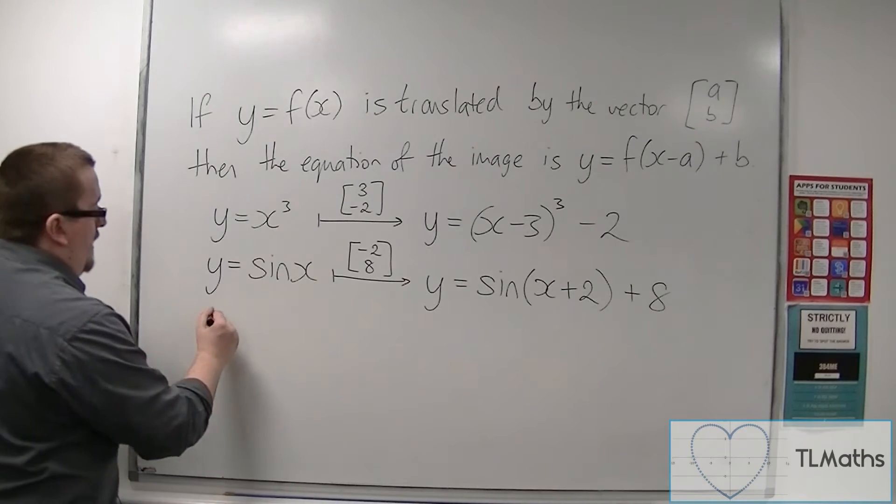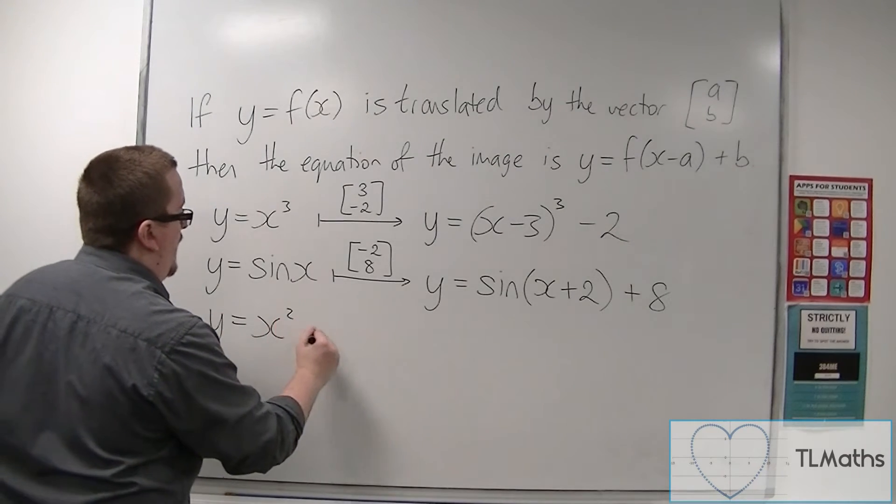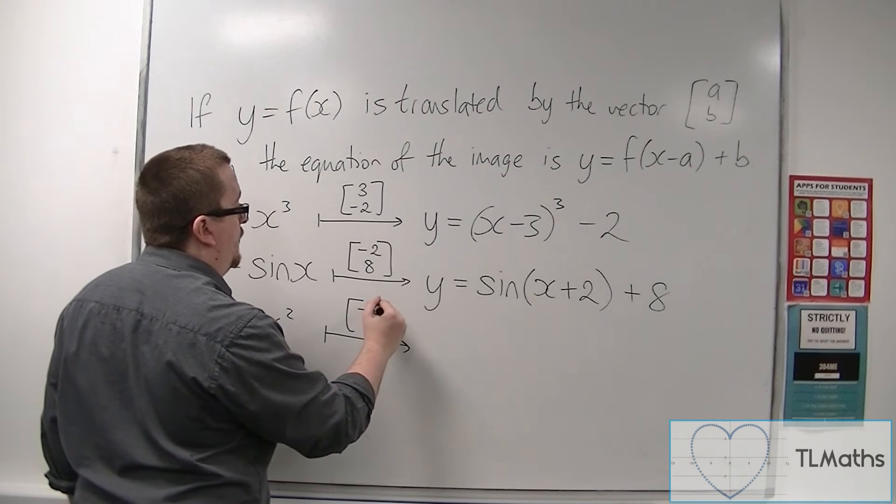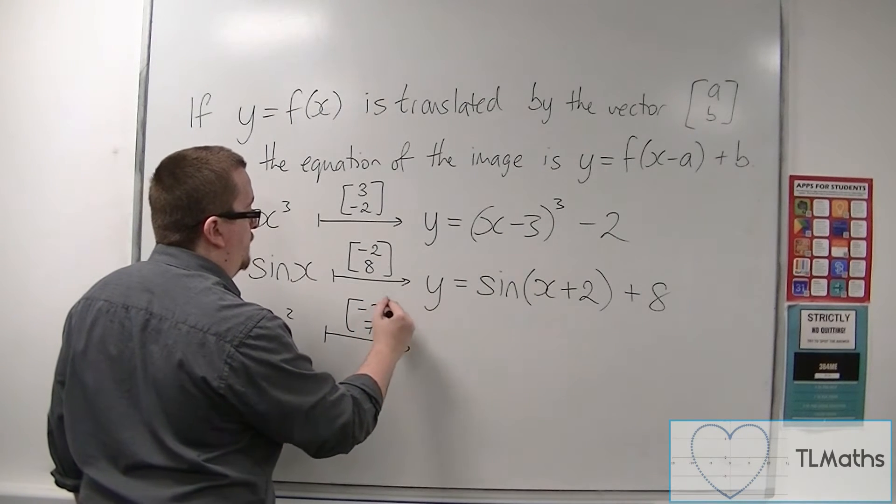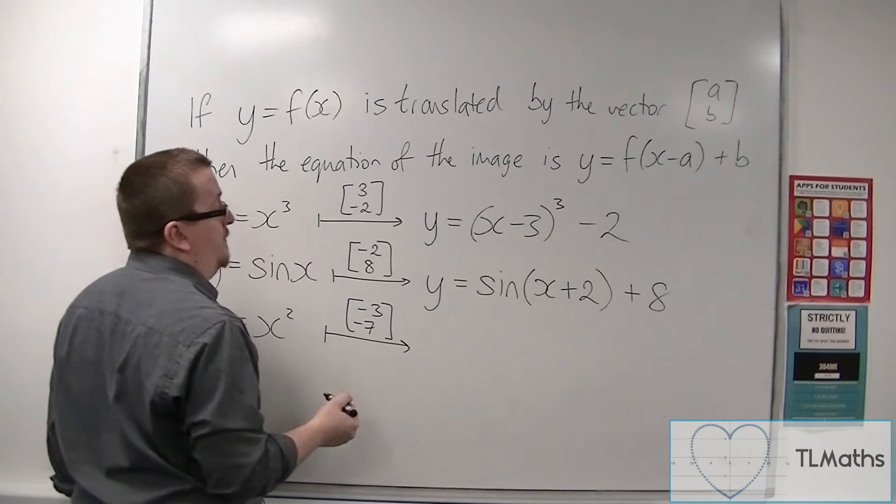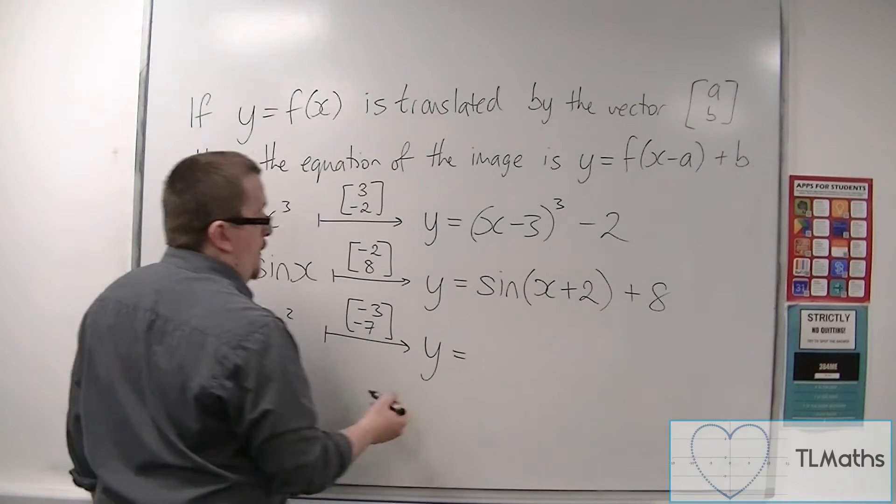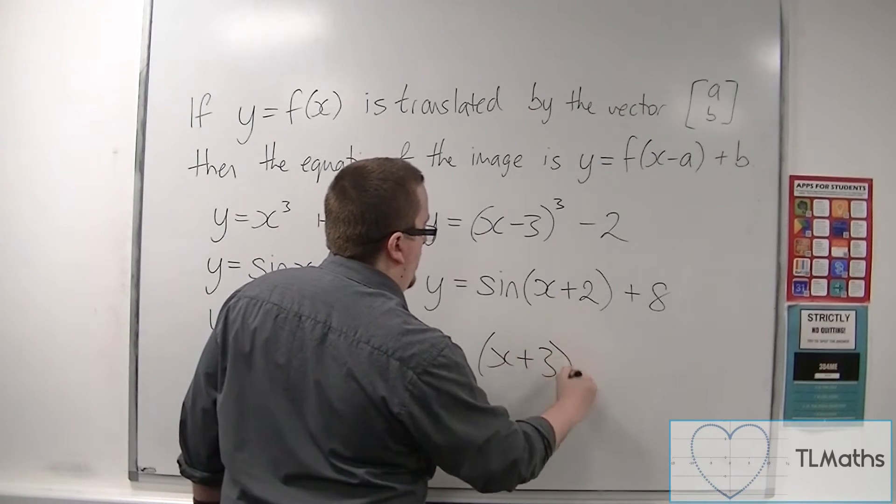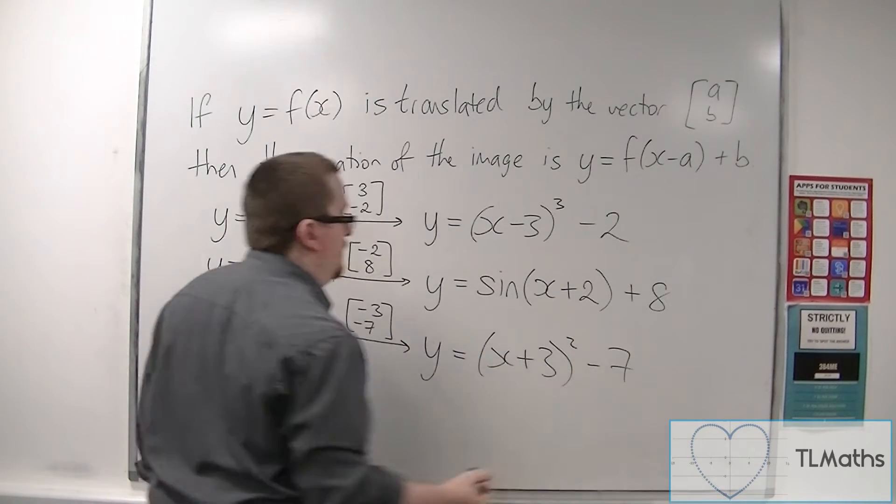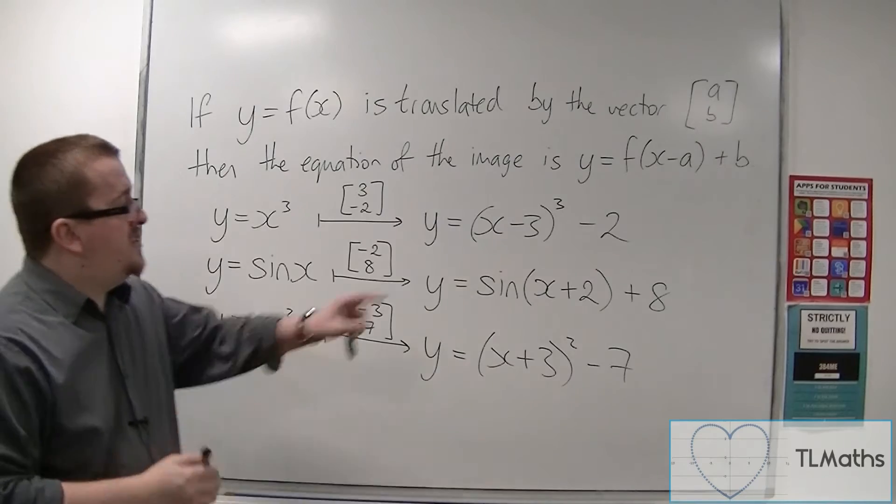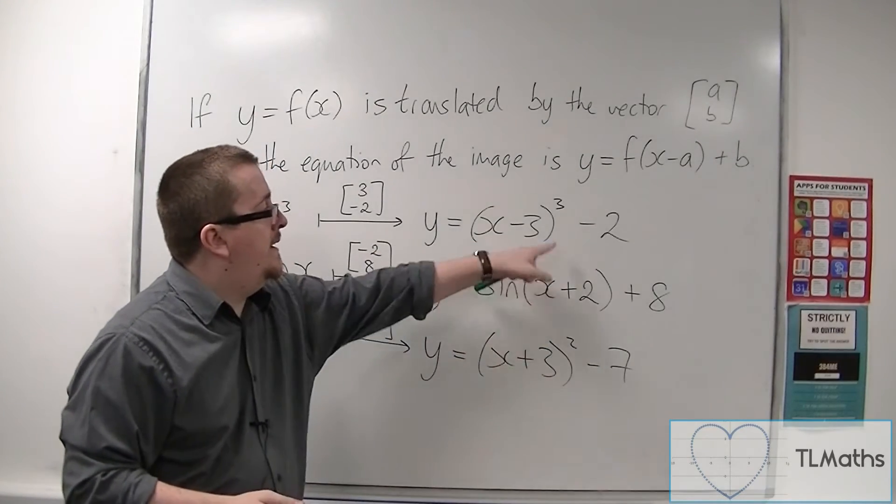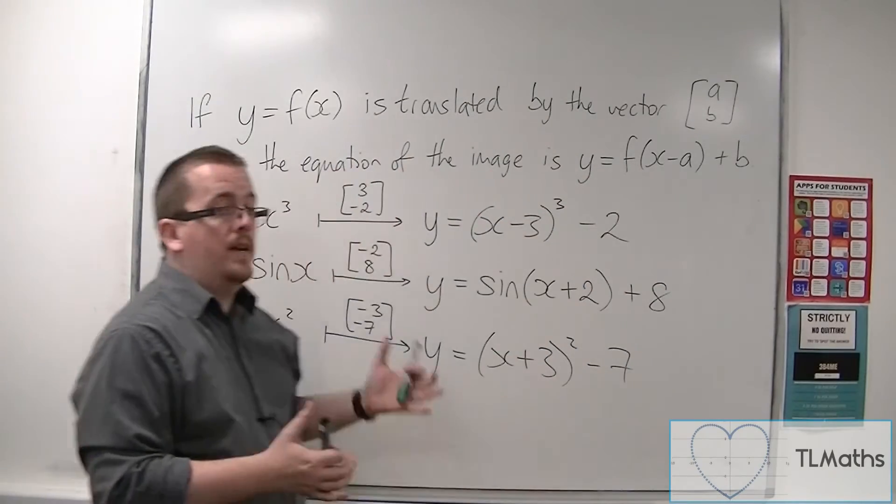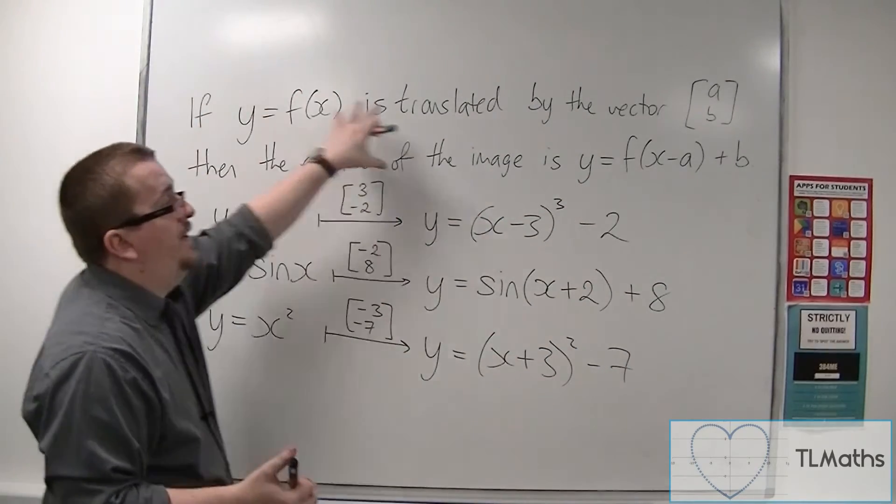In much the same way, if I had y equals x squared and it is translated by the vector (-3, -7), that would be y equals (x plus 3) squared take away 7. So you can start to see that there is a pattern here, and it is this pattern given by this sentence,